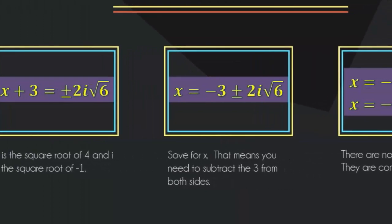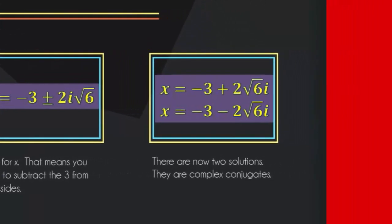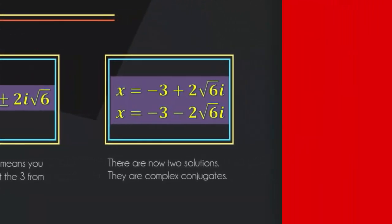Now solve for x. You have to subtract 3 from both sides, take that negative 3, put it in front of the plus or minus sign. In this way you have your two solutions, which are complex conjugates. x equals negative 3 plus 2 times the square root of 6 times i, and x equals negative 3 minus 2 times the square root of 6 times i. Please notice that i is safely outside the radical.